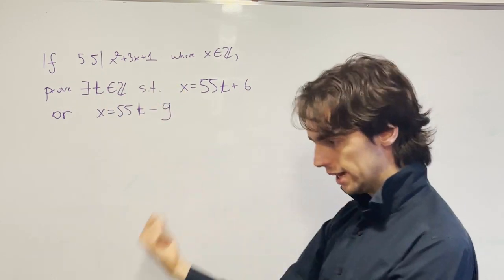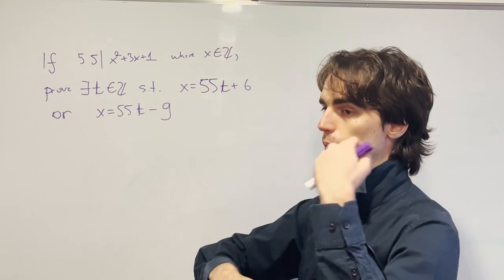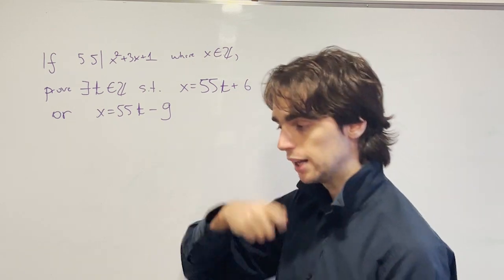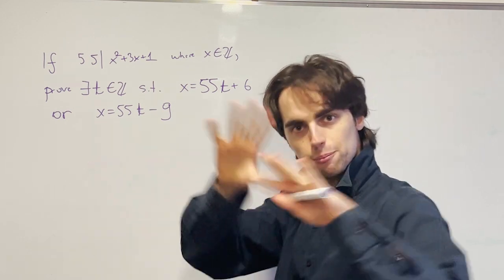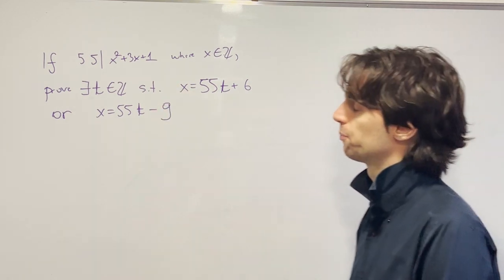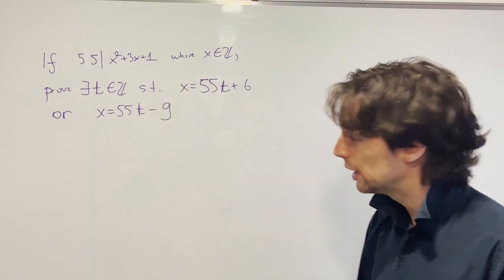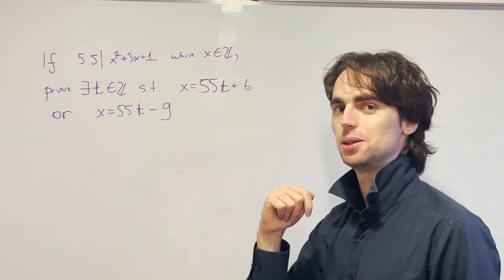I can go over all those remainders, figure out what does that force x to be when divided by 5 and when divided by 11. Then you can figure out, if x is both this modulo 11 and this modulo 5, that implies x is this. That's sort of the thing you can do here. However, that is also not the type of thing I would like to do here.